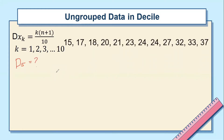All we need to do is identify the given items before going to the conclusion. First, identify the K and N. The K and N are always given in ungrouped data. The K in the given problem is 5, and for N, we count how many data values we have — so we have 12 as the total.